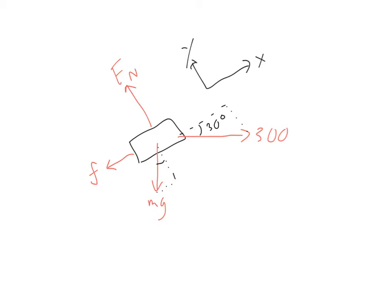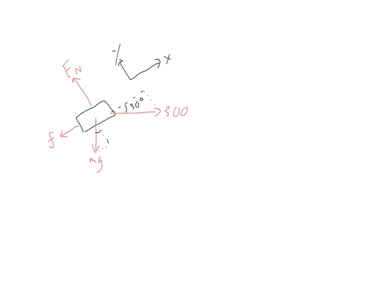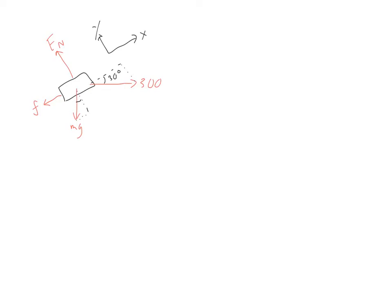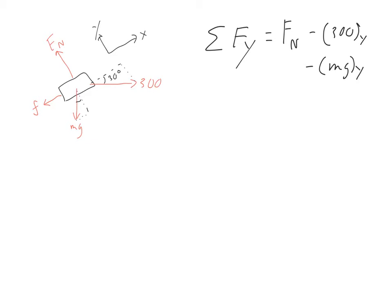We can now set up the sum of the forces. Let's first look at the sum of forces in the y direction. There is only one force in the positive y direction — the normal force. We'll have a component of the applied 300-newton force in the negative y direction, and a component of the weight in the negative y direction. Since the block won't accelerate in the y direction, the sum of forces equals zero by Newton's second law.